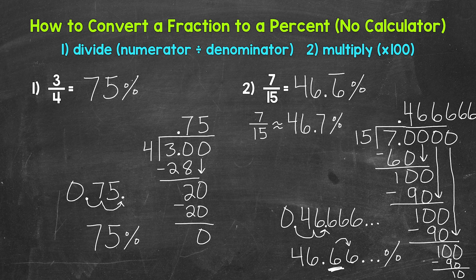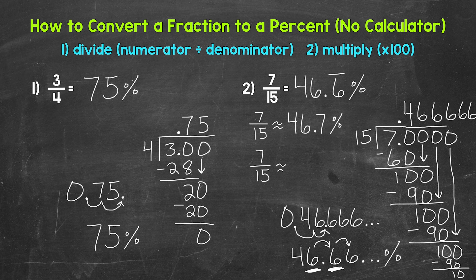You can also round to the nearest hundredth or whatever place you'd like. The last option is rounding to the nearest whole percent — that's the ones place. We have a six in the ones place with a six to the right in the tenths, so is this closer to 46% or 47%? That six in the tenths place tells us to round up — this is closer to 47%. So 7/15 is approximately 47%. A few different options there for working with a repeating decimal.